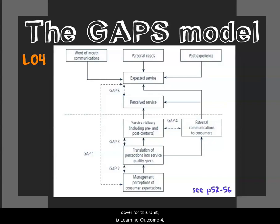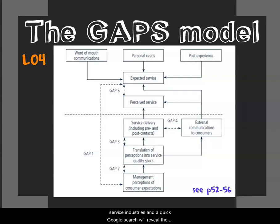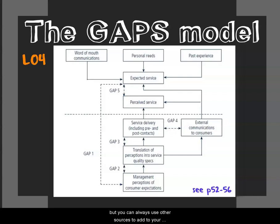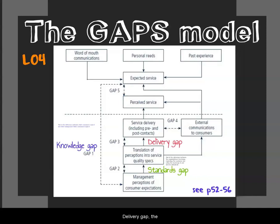The last topic for this unit is Learning Outcome 4: the GAPS model of service quality. This is not just a concept in theory — it is being implemented in various service industries, and a Google search will reveal industries using it. There are five gaps: the knowledge gap, the standards gap, the delivery gap, the communication gap, and the overall service gap. Refer to page 53 to see the image and follow the scheme to understand how the errors work and how the gaps exist.